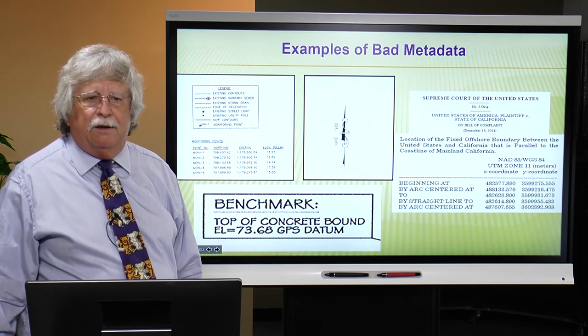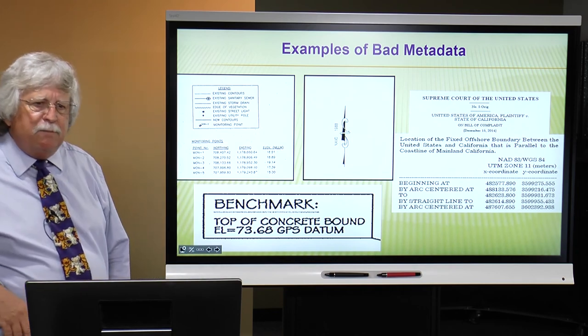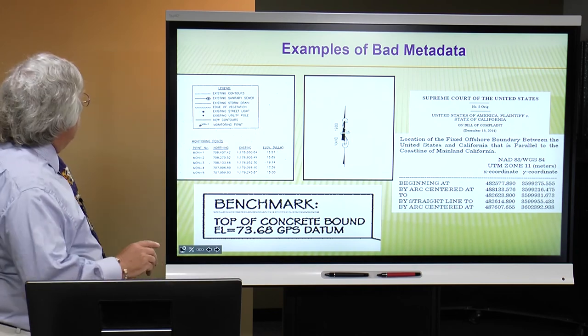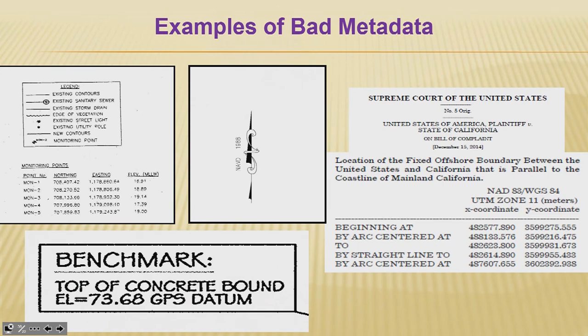Another example — and we'll wrap up this session. Here's a piece of a plaque that a surveyor did for an office that's part of NOAA, the National Oceanic and Atmospheric Administration. They set out some monuments at a site where people are investigating conditions along an estuary — wanting to know how things change with time. The surveyor set several monitoring points, monuments as monitoring points, and provided coordinates and heights. The first thing you see is coordinates — northings and eastings.